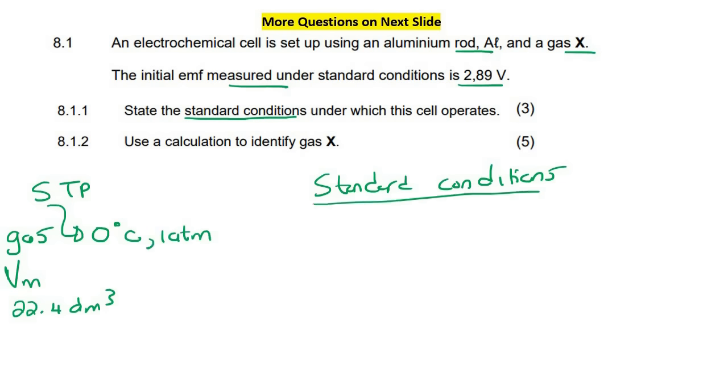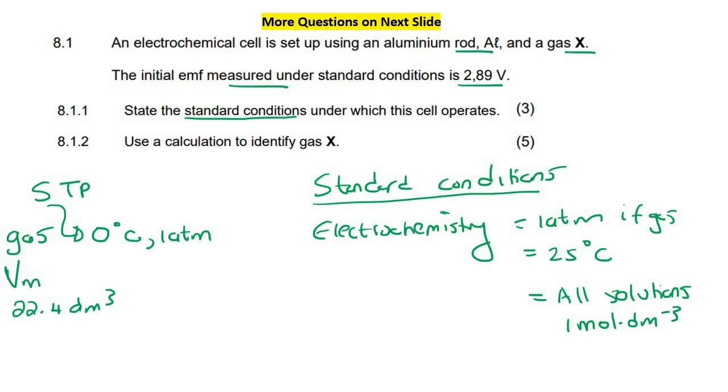When we are at standard conditions, which is what we do with electrochemistry, then we are actually talking about one atmosphere of pressure, but then we're also talking about 25 degrees Celsius, not zero degrees Celsius. Okay, and then if there are gases present, there's the one atmosphere present, and then all solutions must have a certain concentration, and that is one mole per decimeter. Okay, so don't confuse the two. STP is not the same as standard conditions.